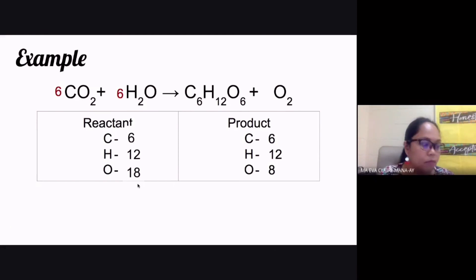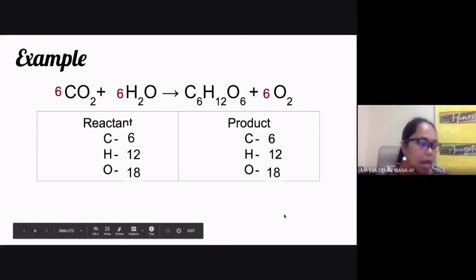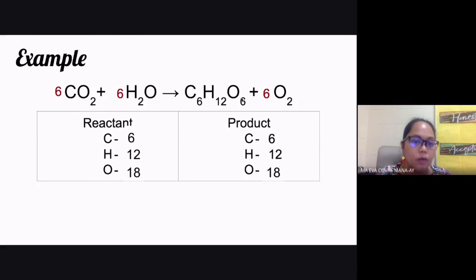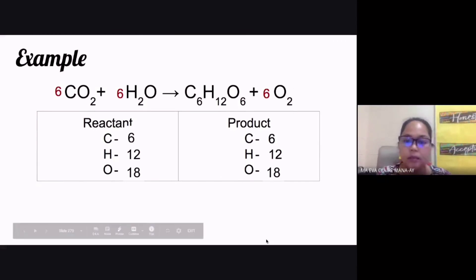We now have 18 oxygen atoms on the reactant side. Miles and Abigail said the coefficient should be six for oxygen gas — correct! Six times two gives 12, plus six equals 18 total. The equation is now balanced. The final answer is: six molecules of CO2 plus six molecules of water yields one molecule of glucose plus six molecules of oxygen gas. Remember, you can only write coefficients, not subscripts, when balancing chemical equations.